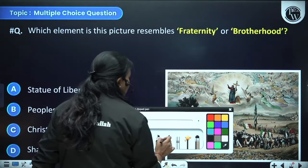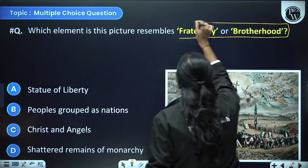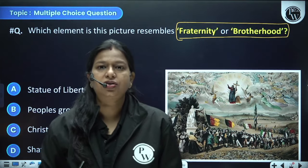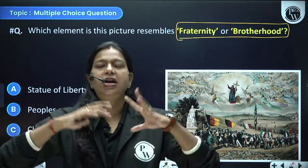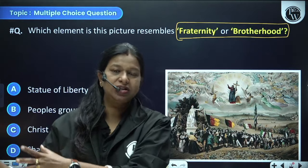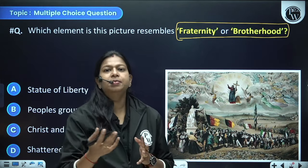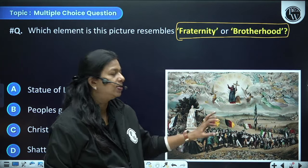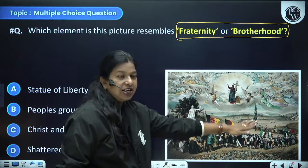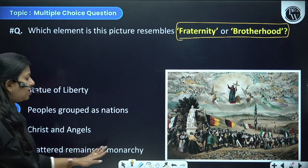Which element in this picture resembles fraternity or brotherhood? This was a utopian image created by Frederick Soro. In this image, he tried to create an imaginary Europe where everybody was identified as nations, moving towards the Statue of Liberty, paying homage to it as a symbol of liberalism and freedom. Many things are represented here: the Statue of Liberty, peoples grouped as nations, Christ and angels, and shattered remains of monarchy.